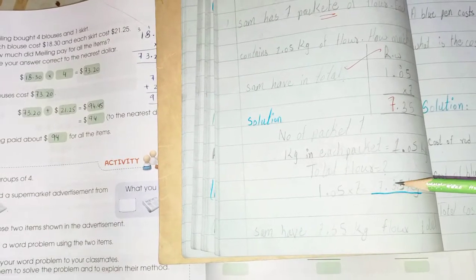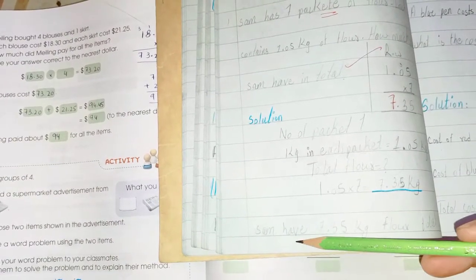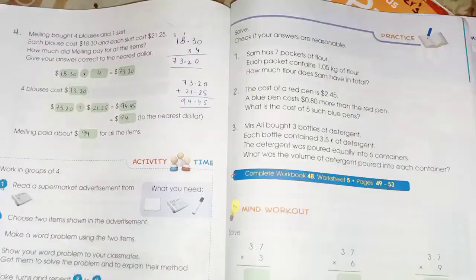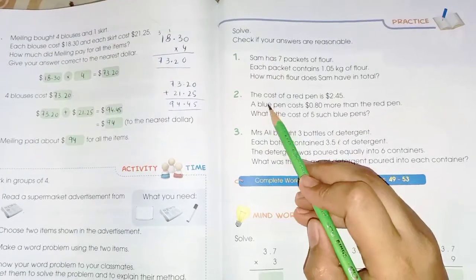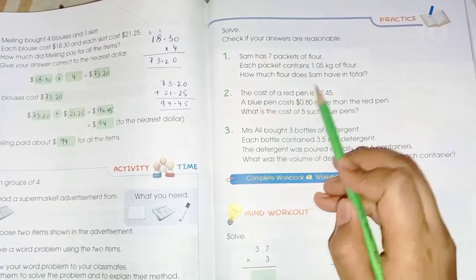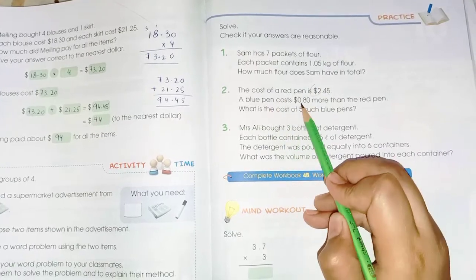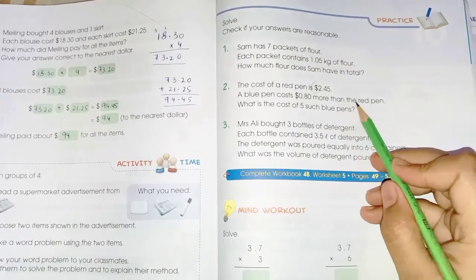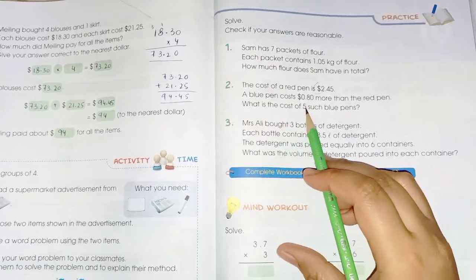Word problem number 2: The cost of a red pen is $2.45. A blue pen costs $0.80 more than the red pen. What is the cost of five such blue pens?